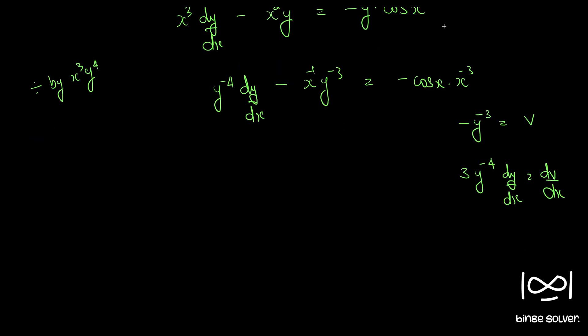Using this, we have 1 by 3 into dv by dx. Y raised to minus 4 dy by dx is 1 by 3 dv by dx. So plus v by x is equal to minus cos x by x cubed.